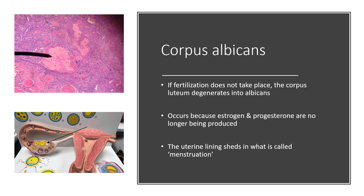If fertilization does not take place, the corpus luteum degenerates into what's called the corpus albicans, pointed out on the model and in the microscope slide. The corpus albicans does not continue to produce estrogen and progesterone, which means the uterine lining is shed in menstruation, and you undergo the process of follicular development again through to ovulation. That is it for oogenesis and ovulation.